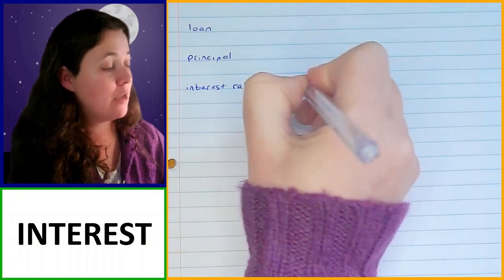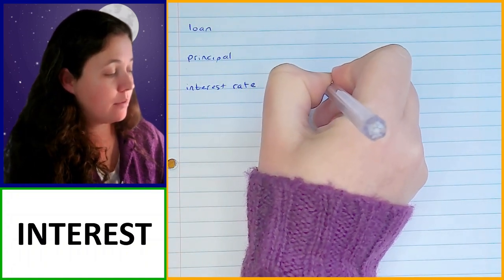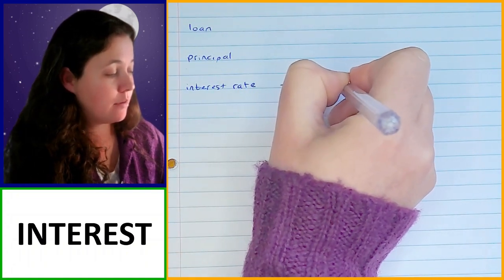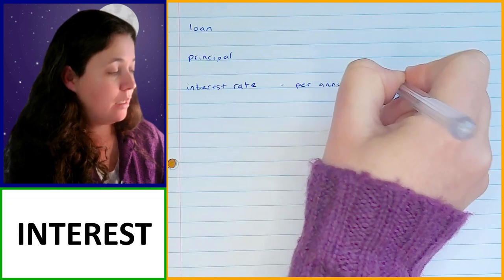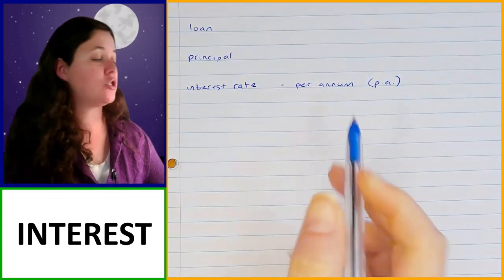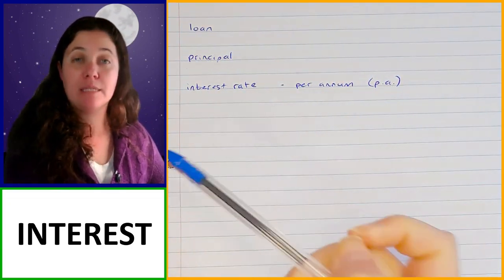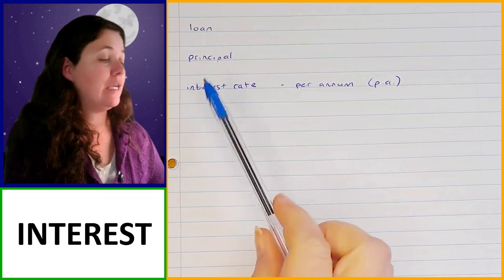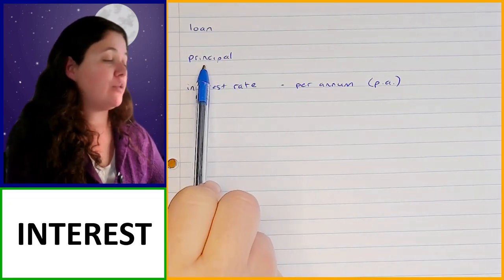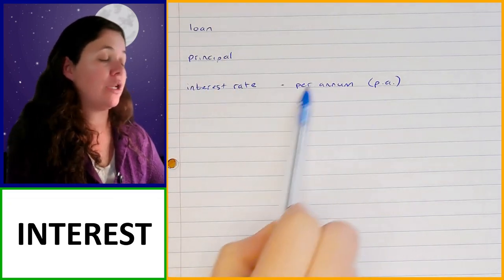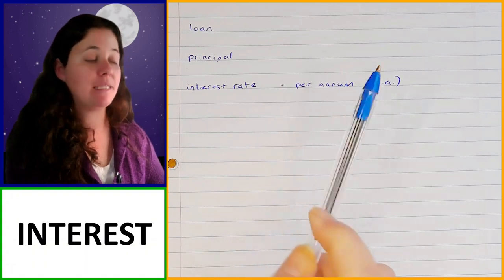The interest rate is a percentage that the money which is invested or borrowed will grow by every year. It is calculated per annum, or PA, which means per year. The interest rate is obviously a percentage, and it's going to be a percentage of the principal amount, calculated on an annual or yearly basis.